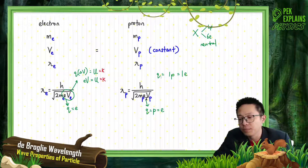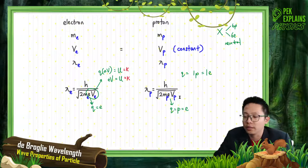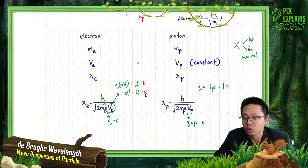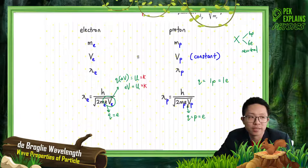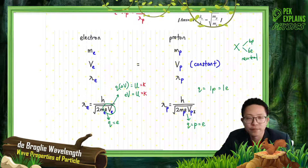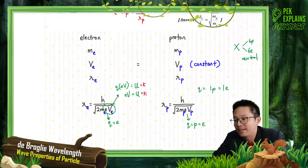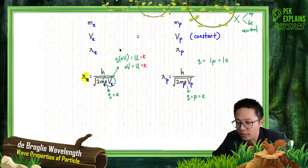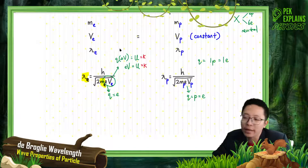So voltage is constant. What is constant for these two conditions? H is constant, two is also constant, electron charge is the same as proton charge — also constant, and the voltage is constant because they use the same potential difference. So the voltage electron equals voltage proton — also constant. What differs is only the lambda and the mass.